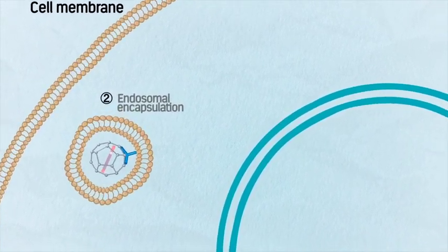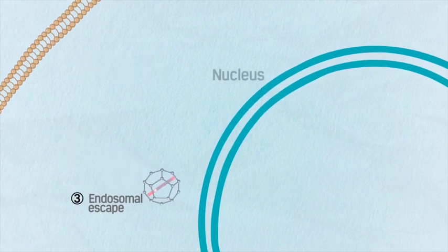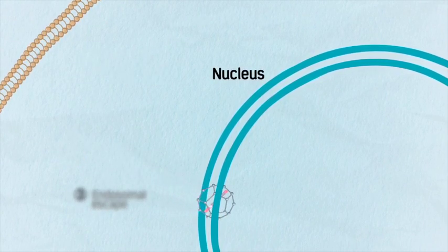creating an internal vesicle. The vesicle breaks down, releasing the vector, which transits to the nucleus through a nuclear pore.